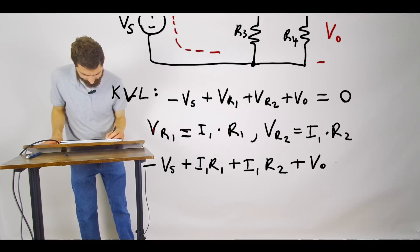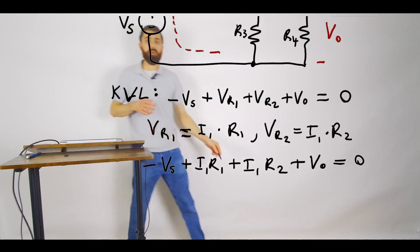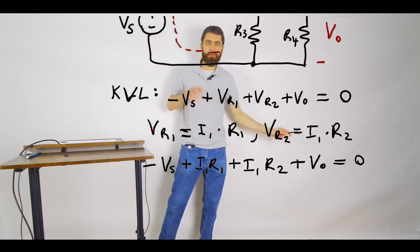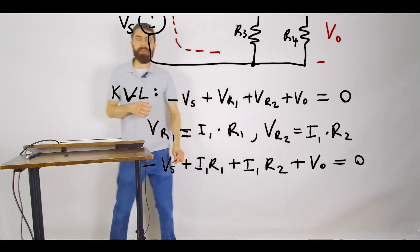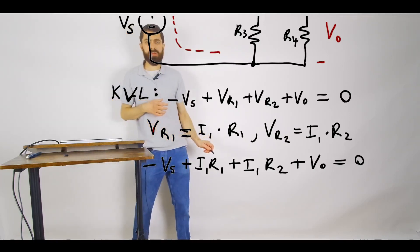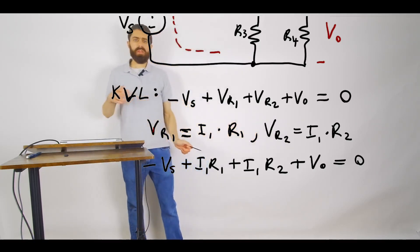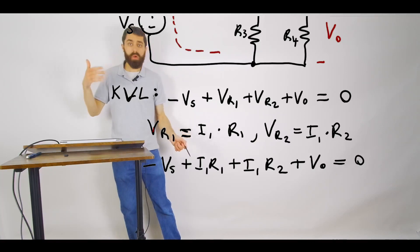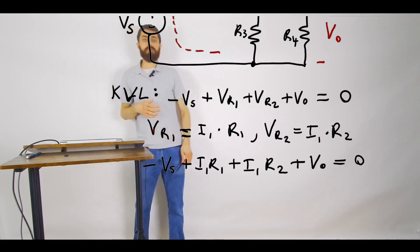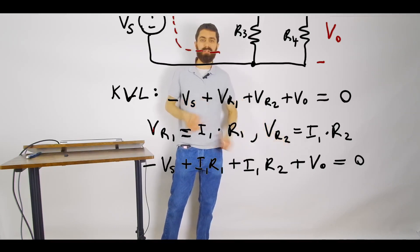Now notice, we're wanting to solve for, oh whoops, I forgot my V0, that's important, that's what we're solving for, V0, plus V0 is equal to zero. So we're solving for V0, that's what we want. Notice how we already know what Vs is, we're assuming Vs is a given, we also are assuming that we know what R1 is and R2 is. So if we can figure out a way to solve for I1, then we should be able to find a solution to V0.